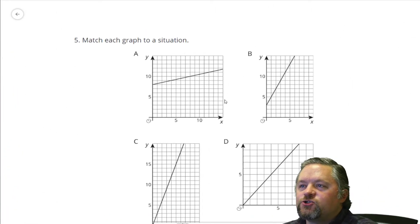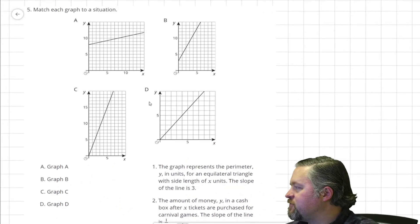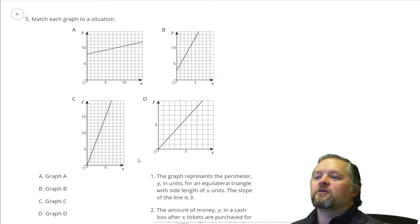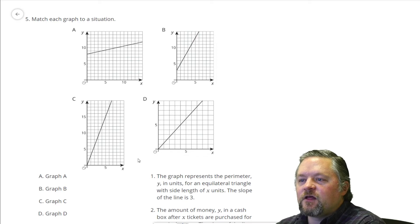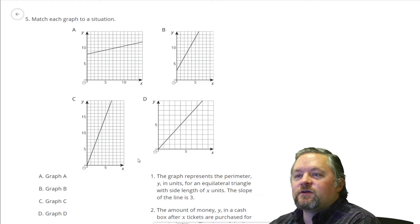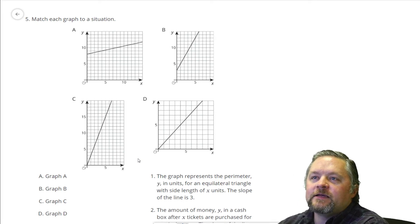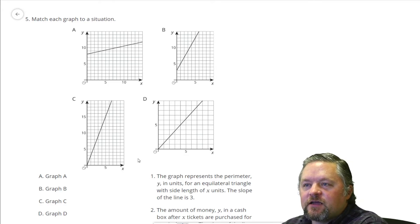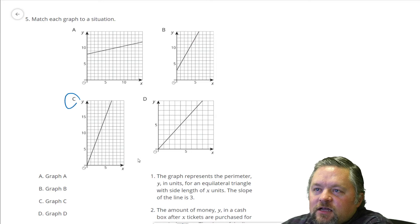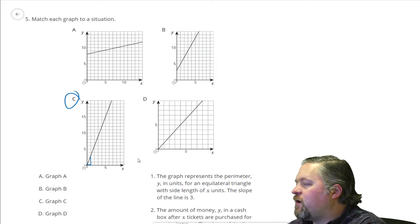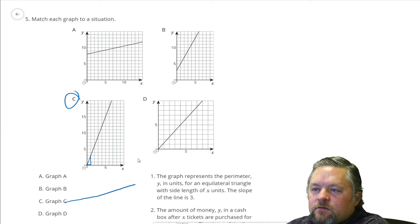Match each graph to its situation. Sorry, we're going to have to zoom this out quite a bit so that we can kind of see here, but the graph that represents the perimeter Y in units for an equilateral triangle with a side length of X units, the slope of the line is 3. Well, if the side lengths are 0, the perimeter is 0. So, this is going to have to go through 0, 0. That means it can't be A and it can't be B, so it has to be C or D. And we need a slope of 3, which means a rise of 3 and a run of 1. That looks like graph C. That has a rise of 3 and a run of 1. So, 1 goes with C.